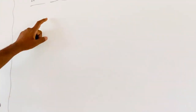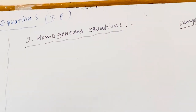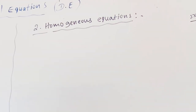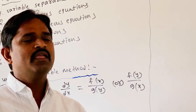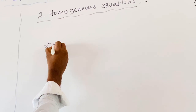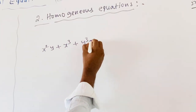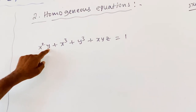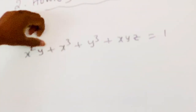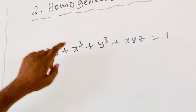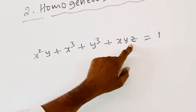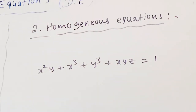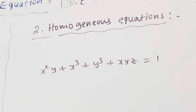The next type is homogeneous equations. Homogeneous means that in a given equation, each and every term contains the same degree. For example, in x²y + x³ + y³ + xyz, the term x²y has degree 2+1=3, x³ has degree 3, and xyz has degree 1+1+1=3. Each term has equal degree, so it is a homogeneous equation.